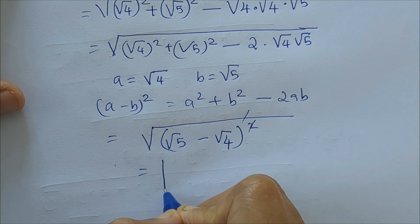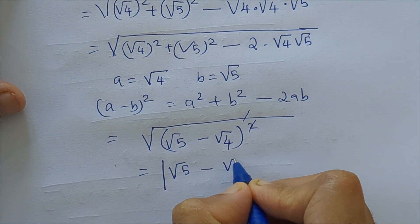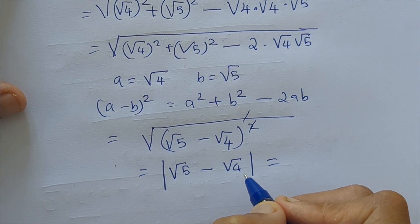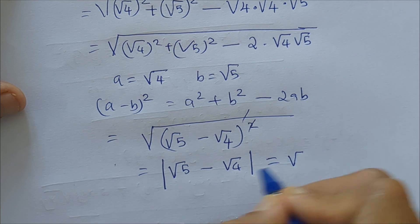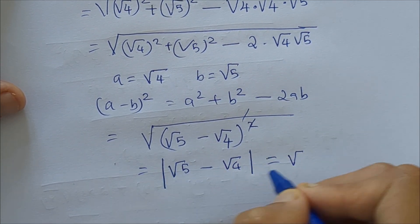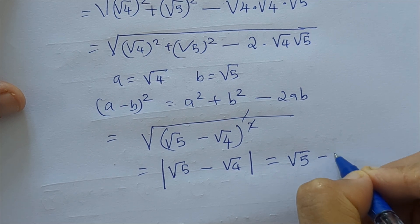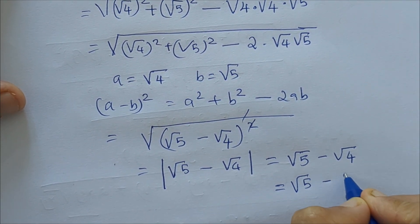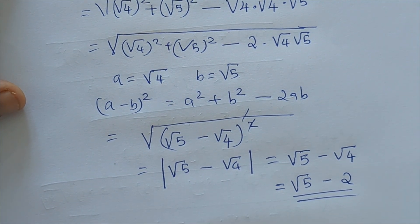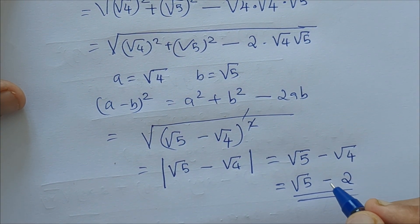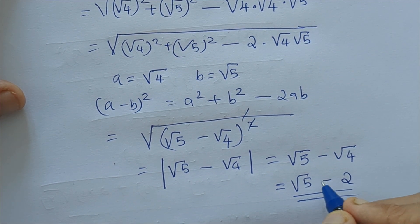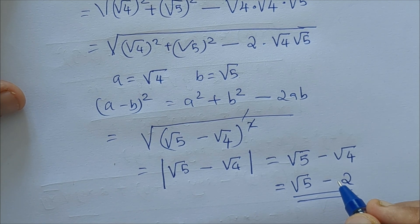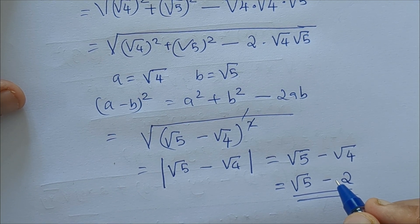We get the absolute value of root 5 minus root 4. Since root 5 is greater than root 4, we get a positive value, so we can remove the absolute value sign and write root 5 minus root 4, which equals root 5 minus 2. That's the simplified answer. Please don't forget to subscribe to my channel — thank you so much for watching!